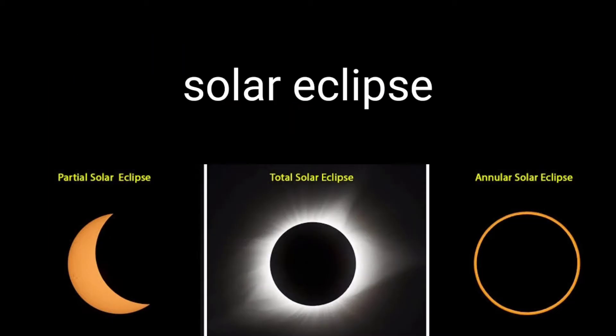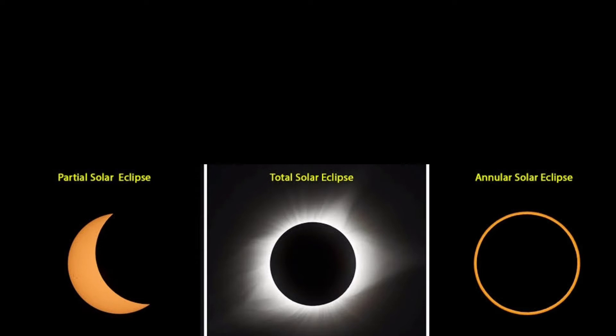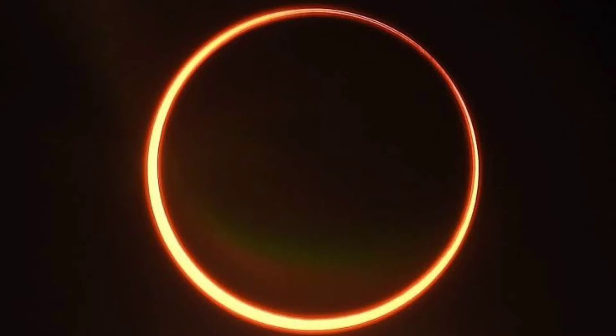If you look at the annular solar eclipse, it's a ring. This is why we are talking about the Ring of Fire. On June 10, we are talking about the Ring of Fire.